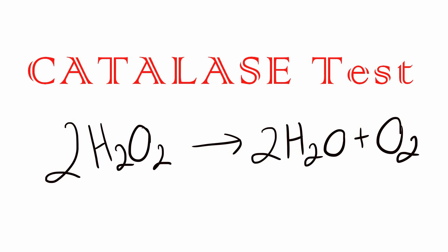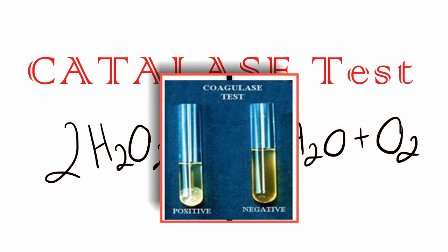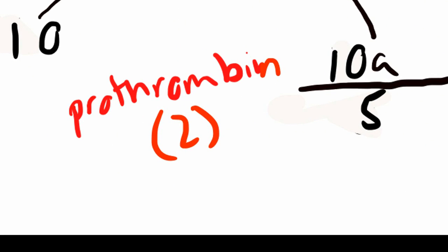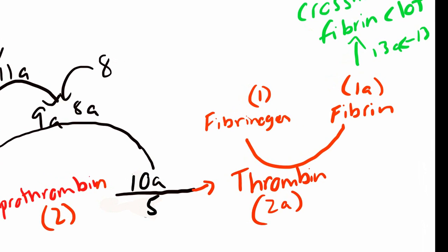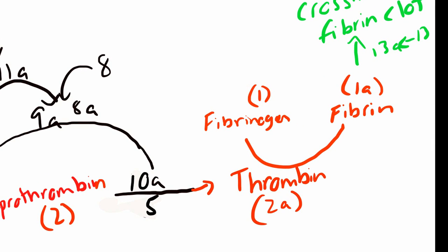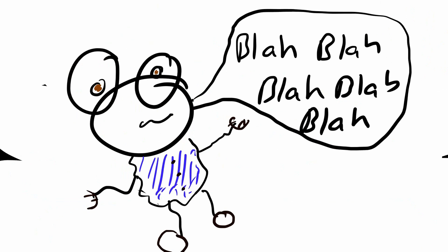We can distinguish Staph aureus from Staph epidermidis and saprophyticus by using the coagulase test. Staph aureus is coagulase positive. The coagulase messes around with prothrombin, aka factor 2, on the coagulation cascade, and eventually it activates it. It'll go down the line and activate factor 1, which is fibrinogen, and then it will activate fibrin. Once it has this fibrin, it wraps itself around it like a blanket, and the fibrin protects it from phagocytosis. It's one of the biggest factors.